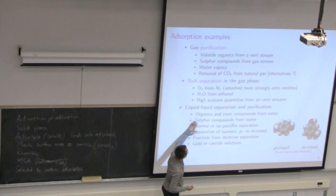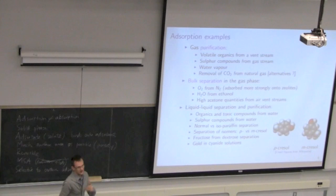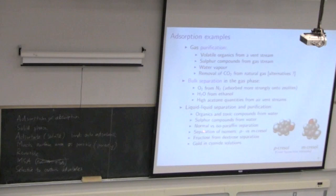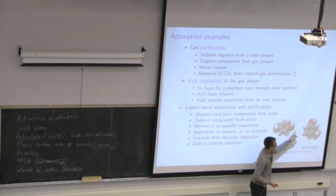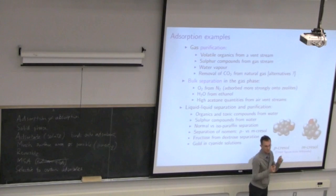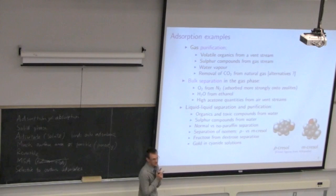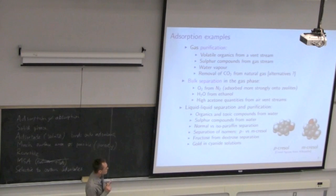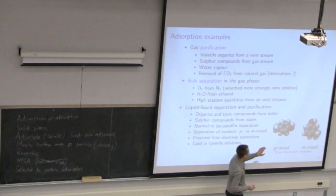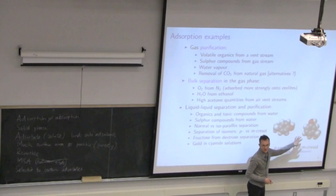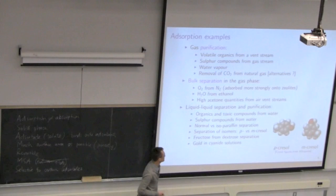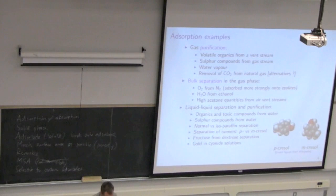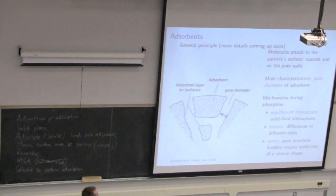We can also do liquid-phase separations, passing liquid through an adsorbent — the Brita water filter is a liquid example. Very interestingly, adsorbents can separate isomers, which have very close boiling points and volatility, so distillation is often not viable. We can find an adsorbent that selectively takes one isomer over the other. I'll also talk about the example of gold and cyanide in upcoming slides.